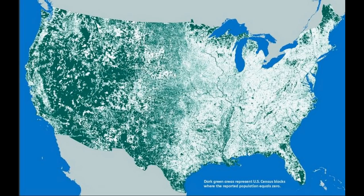In green are places where there is, by the census data, no population at all. So the darker the green, the fewer the number of people.